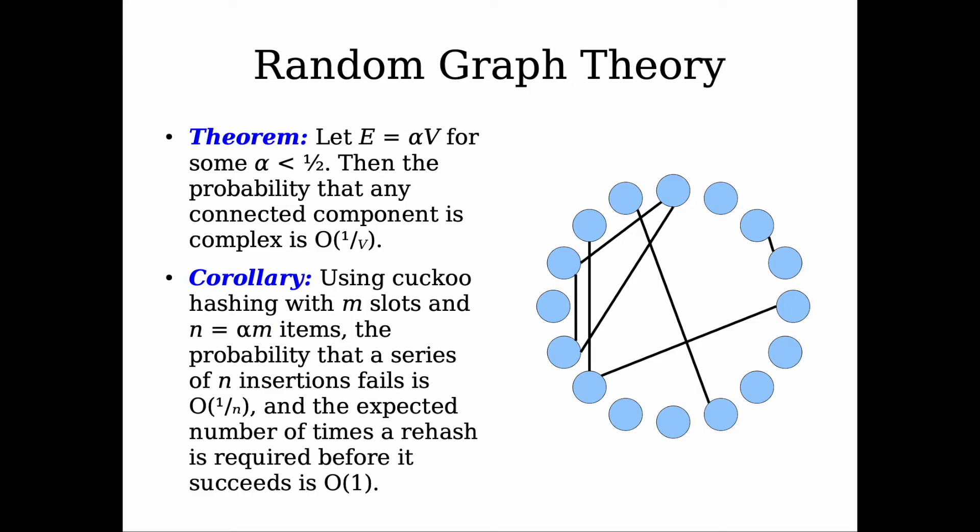And to aid with that, we have a theorem from random graph theory that states that if we have some E—capital E should be the total number of edges—equal to alpha times V, then the probability that any connected component is complex is bounded above by 1 over V. And as a direct corollary for this theorem using cuckoo hashing with m slots and with n equal to alpha times m, just like the definition of the load factor before, the probability that a series of n insertions fails is 1 over n.